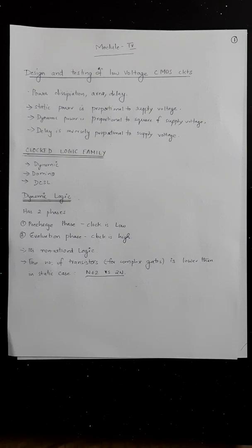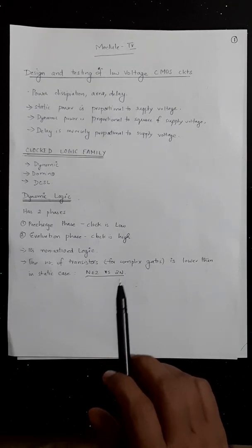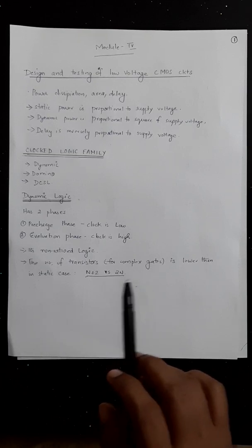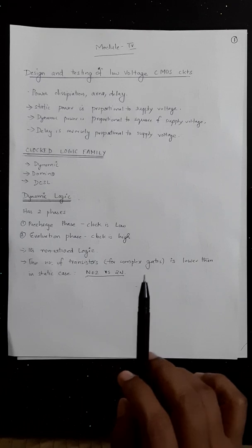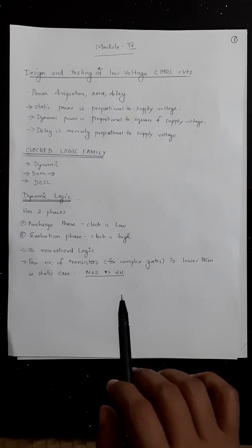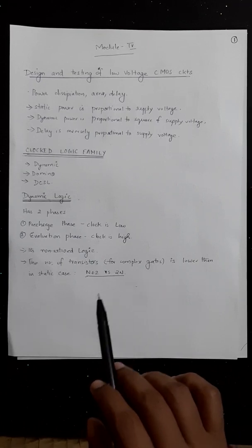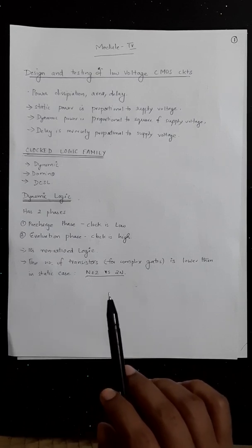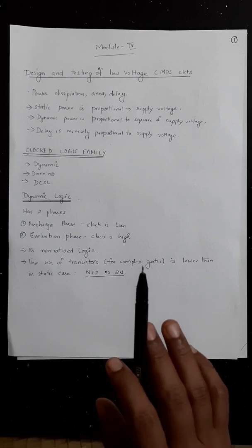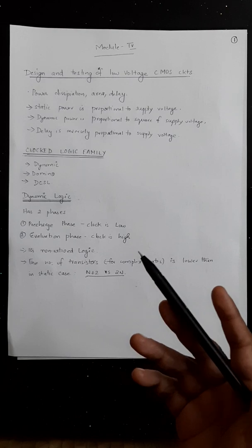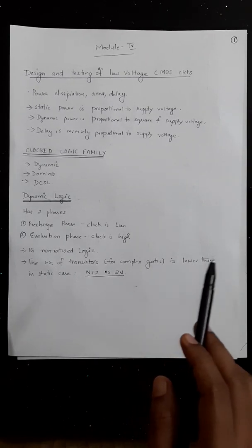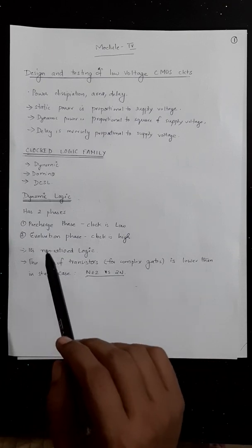The circuit design style plays an important role in determining the performance, power dissipation, and supply voltage scalability. Circuit designs are divided into two types: clocked logic design and non-clocked logic design. Clocked logic design means you're applying a clock; in non-clocked there is no clock applied. Clocked designs are generally faster but consume more power. The designer chooses the style based on circuit speed, size, power dissipation, and wiring complexity.